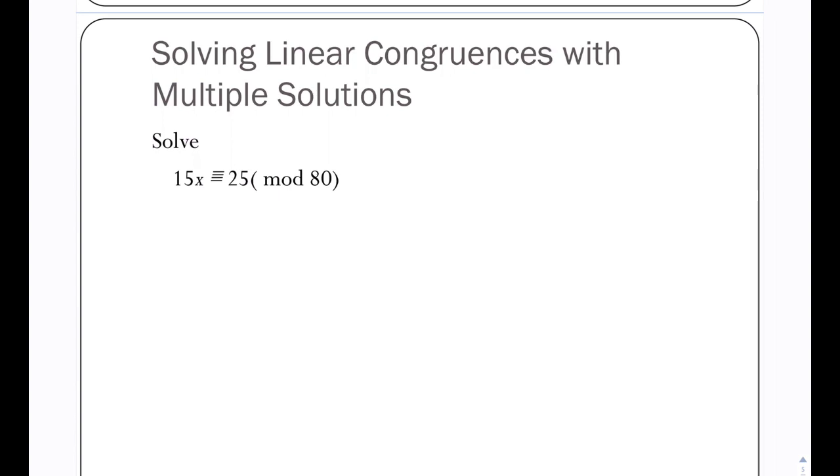Now I want you to pause the video and try this one on your own. So all 3 values are divisible by 5. We've got 3x congruent to 5 mod 16. We need the inverse of 3 mod 16. So 1 is 17, I'm adding 16 on, and I've got 33, which is 3 times 11.